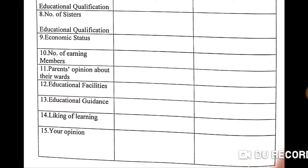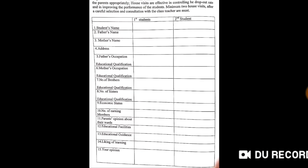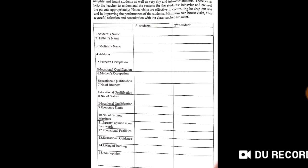On the fourteenth point, write the liking of learning. If the student likes to learn, they will take interest and do their best in education. On the fifteenth point, write your own opinion about the student — it may be positive or negative. You have to observe the student properly and write a proper opinion so that the student could do their best in education. This is the very simple format for collecting information, and with this format you can write a report.